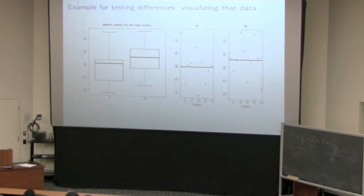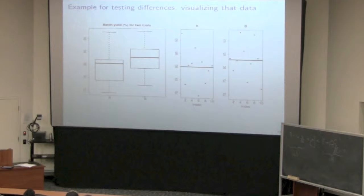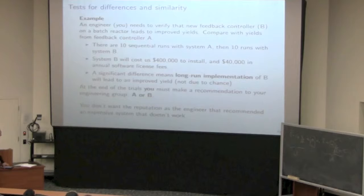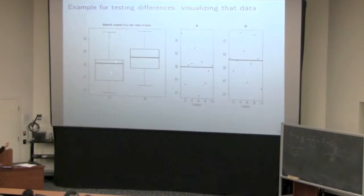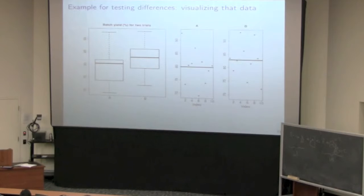This is exactly the case where these methods are needed, because in many engineering situations we make small improvements that are within the level of spread of the data. This is when we need to use proper statistical tools. When the system difference is large, it's a no-brainer. But when the system difference is within this sort of level, you need to do a statistical test. Here are my 10 data points for system A and my 10 data points for system B.